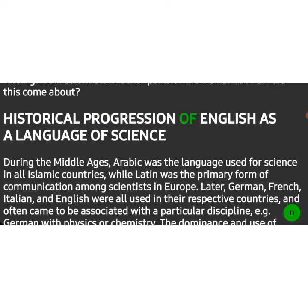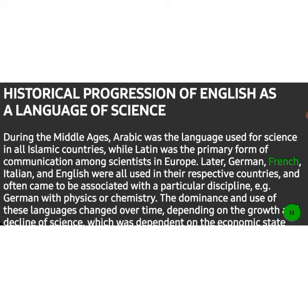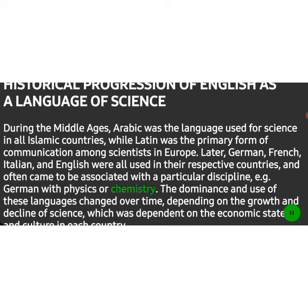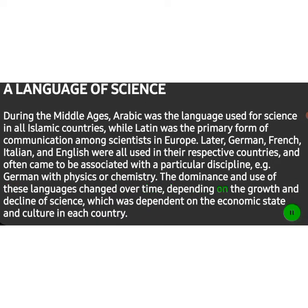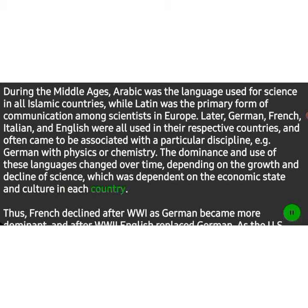Historical progression of English as a language of science. During the Middle Ages, Arabic was the language used for science in all Islamic countries, while Latin was the primary form of communication among scientists in Europe. Later, German, French, Italian, and English were all used in their respective countries, and often came to be associated with a particular discipline, e.g. German with physics or chemistry. The dominance and use of these languages changed over time, depending on the growth and decline of science, which was dependent on the economic state and culture in each country.